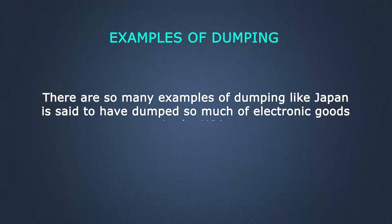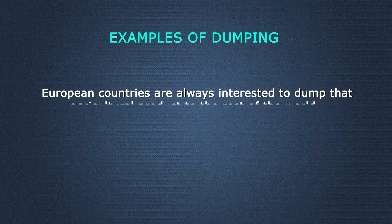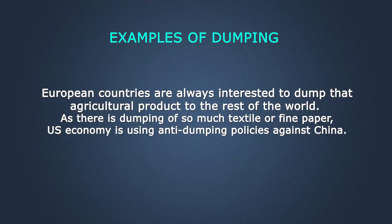There are so many examples of dumping in real life. Japan is said to dump many electronic goods in the USA. European countries are always interested in dumping agricultural products to the rest of the world. And for dumping of textiles or fine papers, the US economy is using anti-dumping policy against China. Even though dumping is prohibited and restricted according to international laws, there are so many real-life examples of dumping.